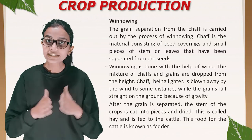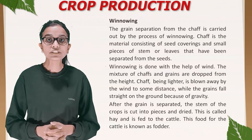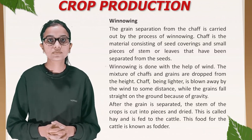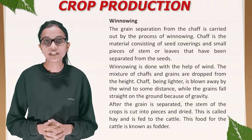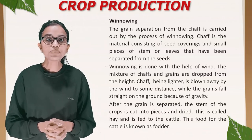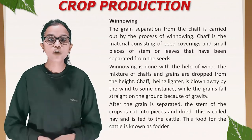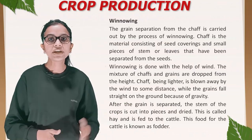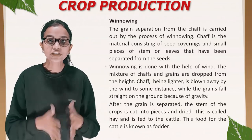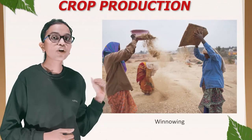Winnowing: the separation of grains from the chaff is carried out by winnowing. Chaff consists of seed coverings and small pieces of stem or leaves separated from the seeds. Winnowing is done with the help of wind — the mixture of chaff and grains is dropped from a height; chaff, being lighter, is blown away by the wind, while the grain falls straight to the ground due to gravity. After the grain is separated, the crop stem is cut and dried — this is called hay and is fed to cattle as fodder.